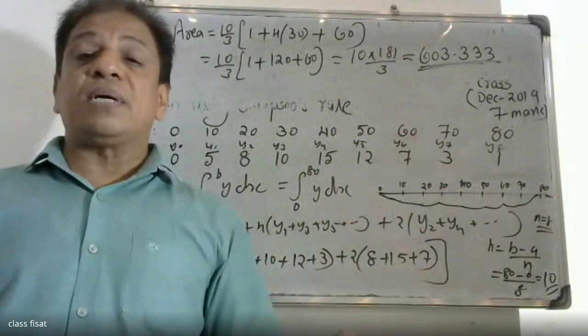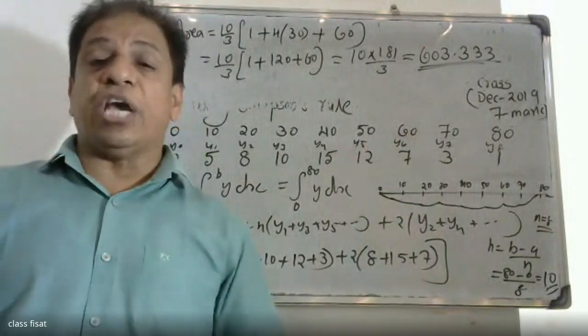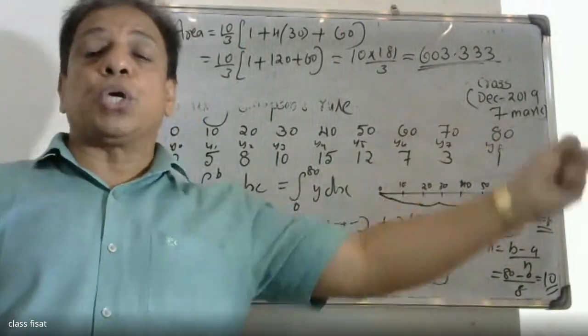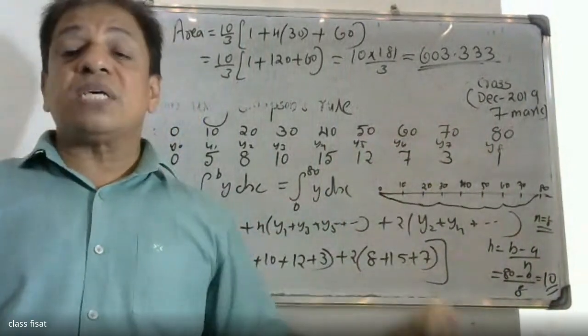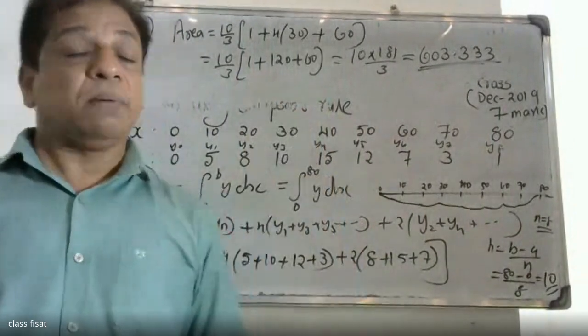We used a numerical technique for this integration. Since we applied Simpson's one-third rule, the number of intervals must be even, which it is — N equals 8.